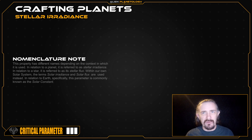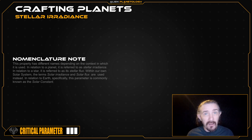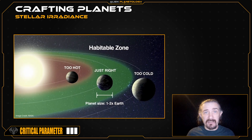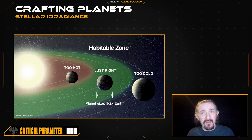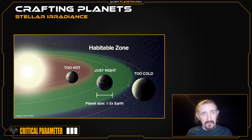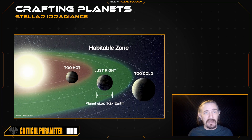Stellar irradiance is just the energy being emitted from the star as measured at some distance away — in this case, the distance at which your planet will orbit. The closer a planet orbits to its parent star, the more energy it will receive and the hotter its climate will tend to be. The farther it orbits away from the parent star, the less energy it will receive and the colder its climate will tend to be.